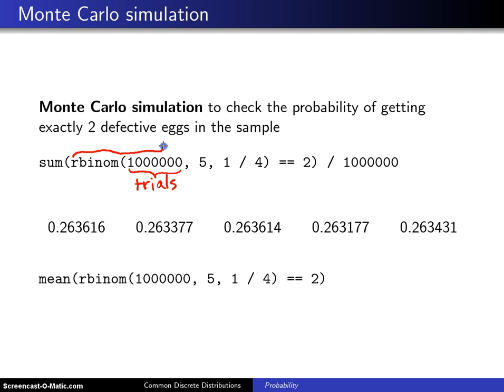That will generate you a vector of 1 million values that are all equal to 0, 1, 2, 3, 4, or 5. So there's a long vector of a million values. Each element of that vector will be a 0, 1, 2, 3, 4, or 5.